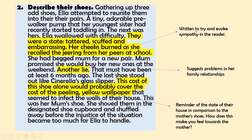'The last shoes stood out like Cinderella's glass slipper — the cost of this shoe alone would probably cover the cost of the peeling yellow wallpaper that seemed to infect the walls of their house. This was her mum's shoe. She shoved them in the designated shoe cupboard and shuffled away before the injustice of the situation became too much for Ella to handle.' This part is written to evoke sympathy — 'another lie' suggests problems in the family relationship. The cost of the mum's shoe compared to the state of the house asks: how do you feel towards the mother? I feel sympathy for Ella, not the mother.